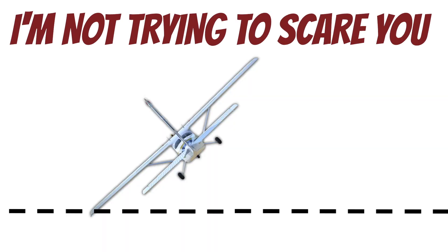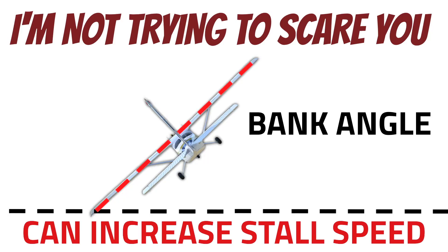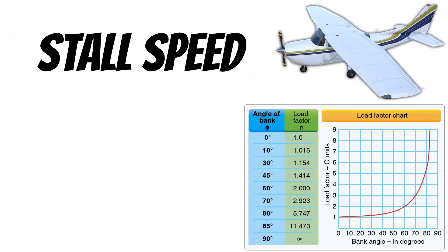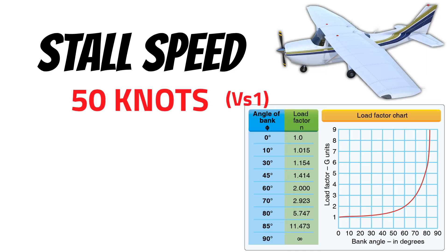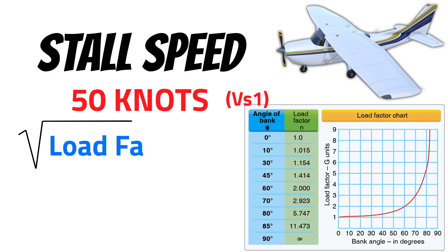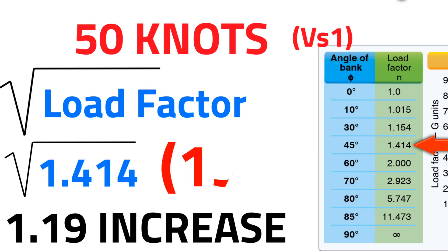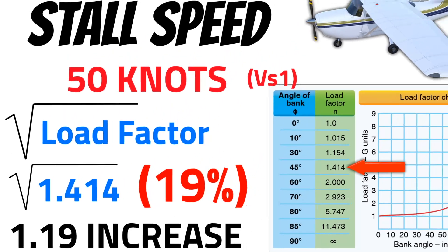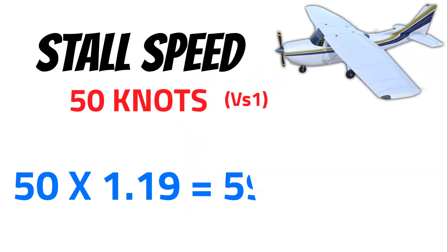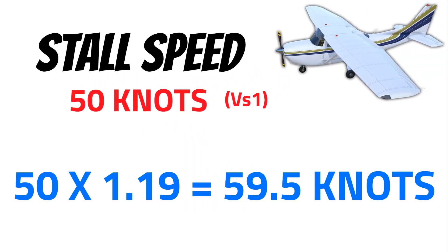Bank angle can significantly increase the stall speed of your aircraft. Let's say the stall speed of my airplane is 50 knots. Taking the square root of 1.414 Gs means stall speed will increase by almost 20%, so the new stall speed will be almost 60 knots. If you're not expecting this, it could be disastrous.